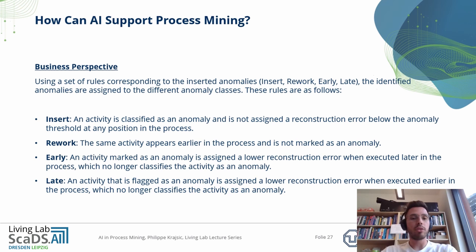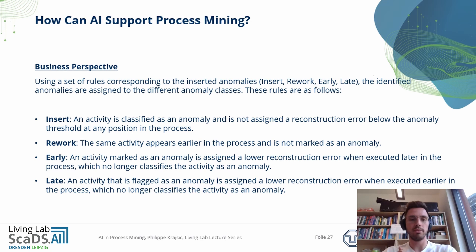Using a set of rules corresponding to the inserted anomalies — insert, rework, early, and late — the identified anomalies are assigned to the different anomaly classes. The rules are as follows. For insert: an activity is classified as an anomaly and is not assigned a reconstruction error below the anomaly threshold at any position in the process. For rework: the same activity appears earlier in the process and is not marked as an anomaly. For early: an activity marked as an anomaly is assigned a lower reconstruction error when executed later in the process, which no longer classifies it as an anomaly. For late: an activity flagged as an anomaly is assigned a lower reconstruction error when executed earlier in the process, which no longer classifies it as an anomaly.